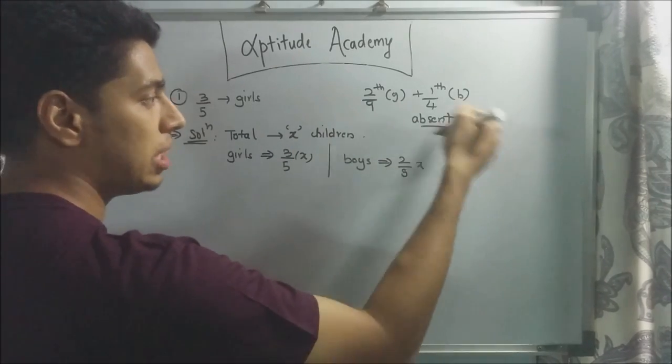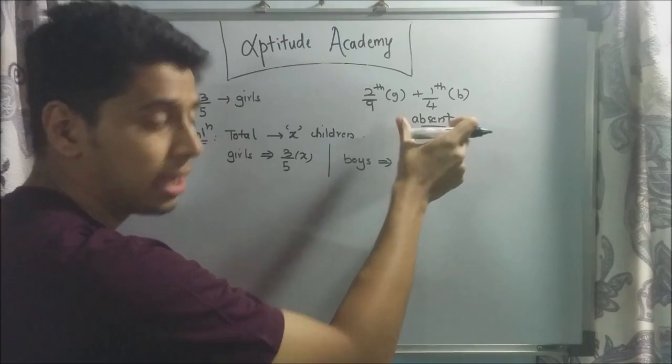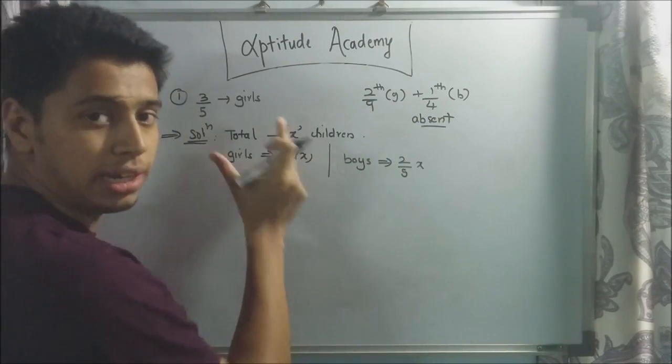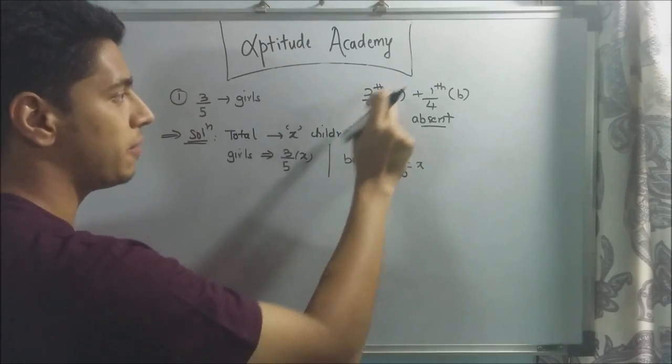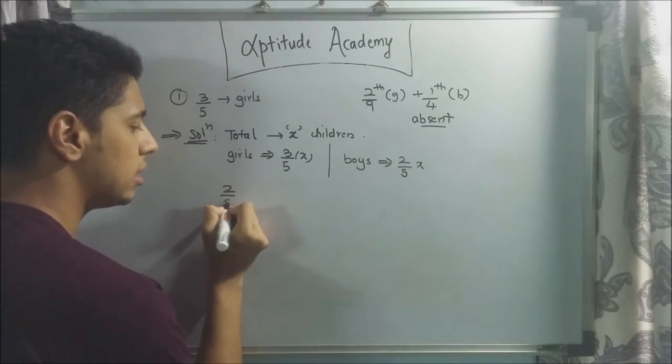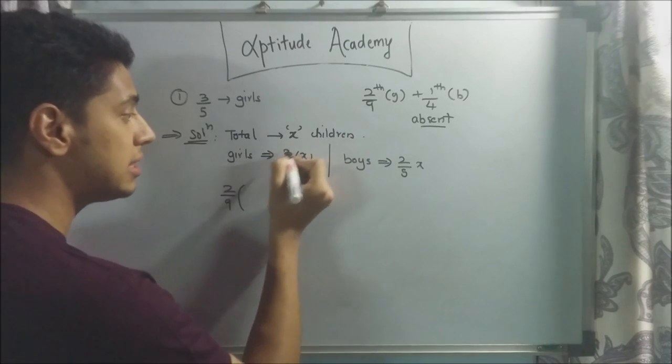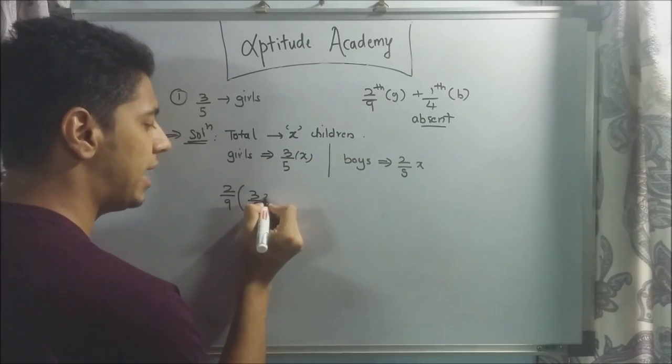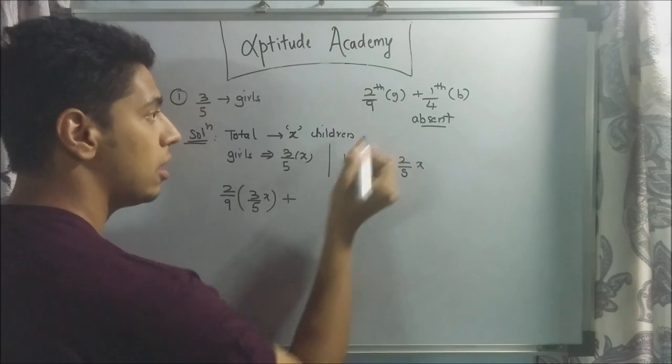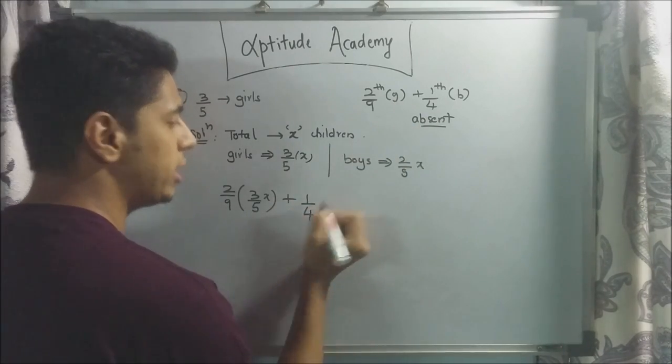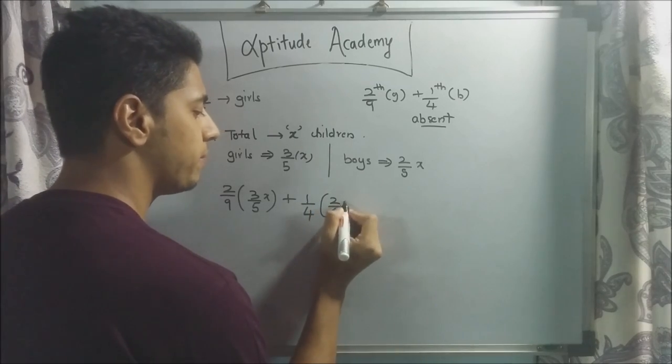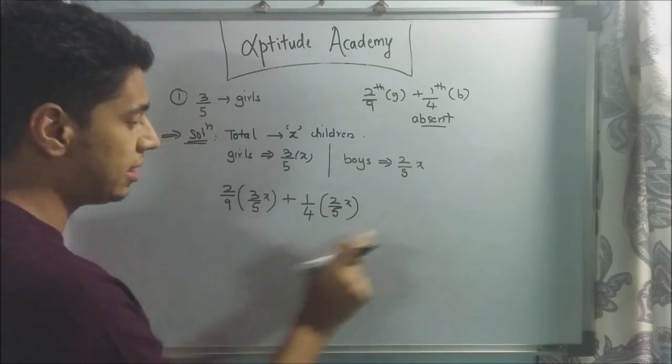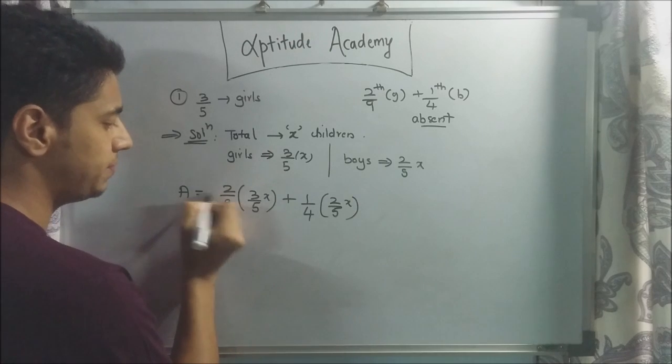What you have to do is find the total number of children that are absent, then subtract that from the total children and that will give you the number of children that are present. Absent is 2/9 of the girls. So 2/9 of the girls. Girls are 3/5 of the class. So 3/5 x. Plus, 1/4 of the boys that are in the class. Boys are 2/5 x. So 2/5 x. These are the children that are absent. So a is equal to this.